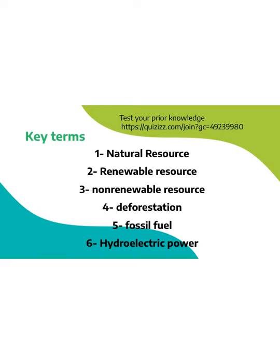The main key terms that you should write down on your ESS copybooks are: natural resource, renewable resource, non-renewable resource, deforestation, fossil fuel, and hydroelectric power. Take two minutes to check your prior knowledge and evaluate what you already know about natural resources.